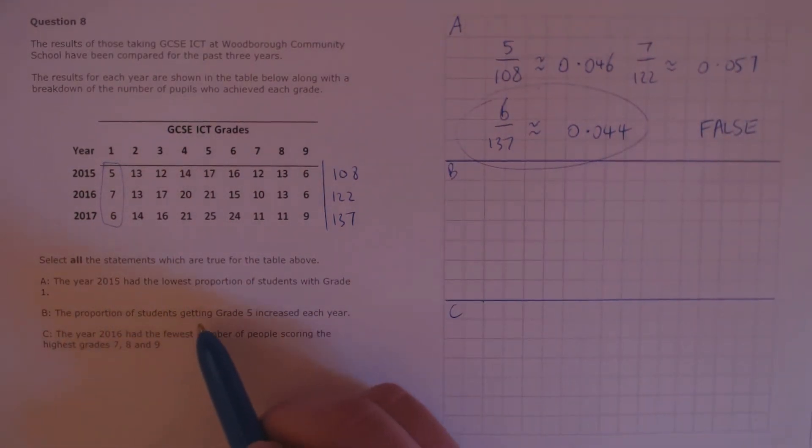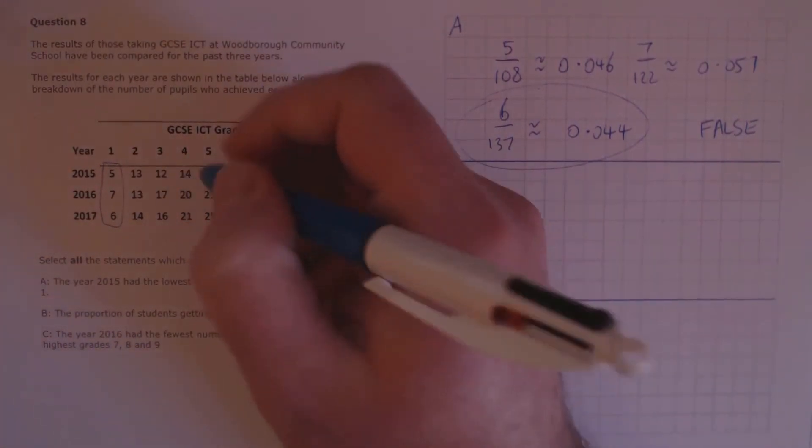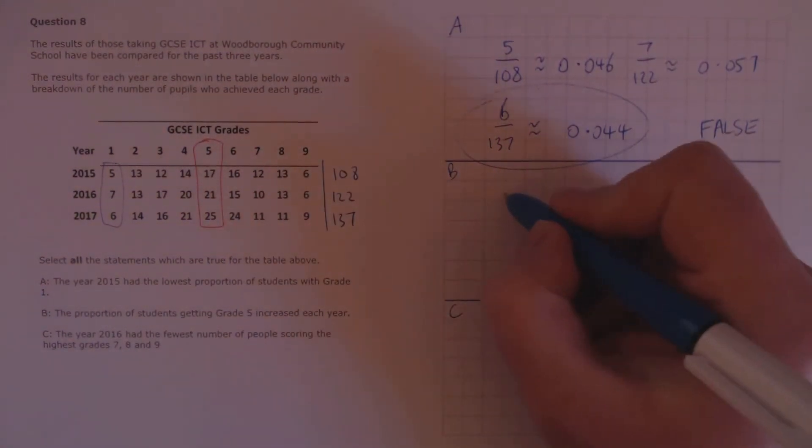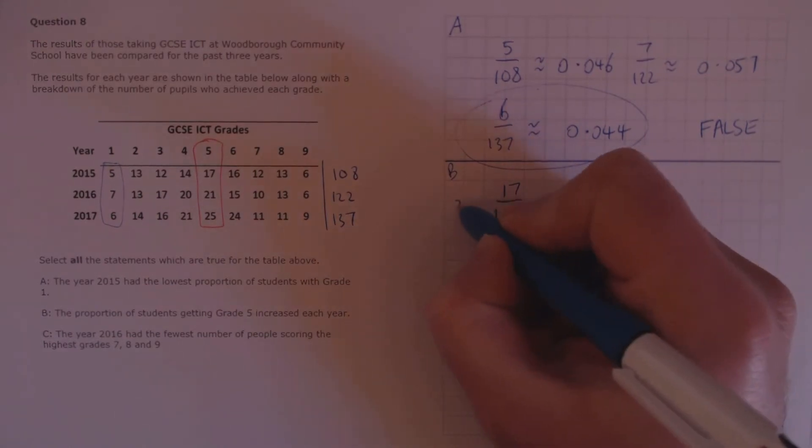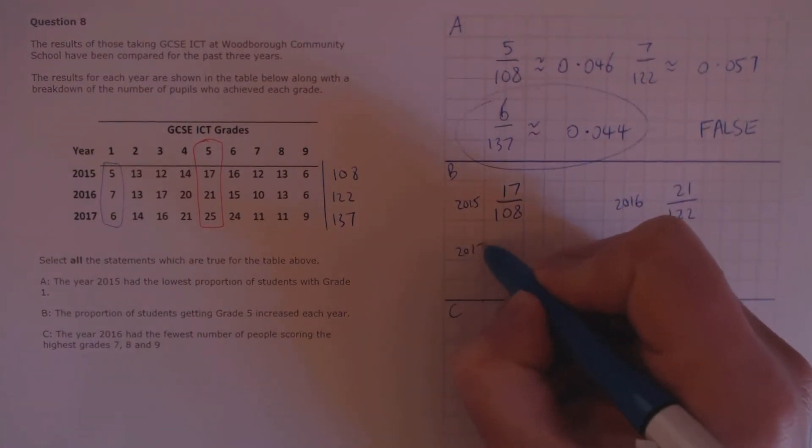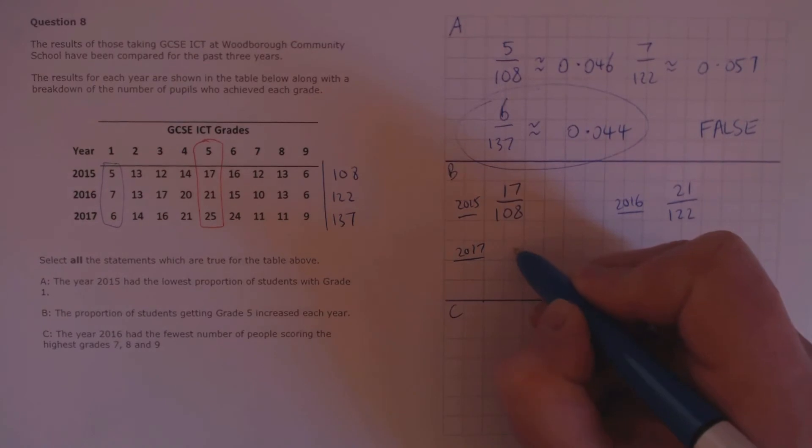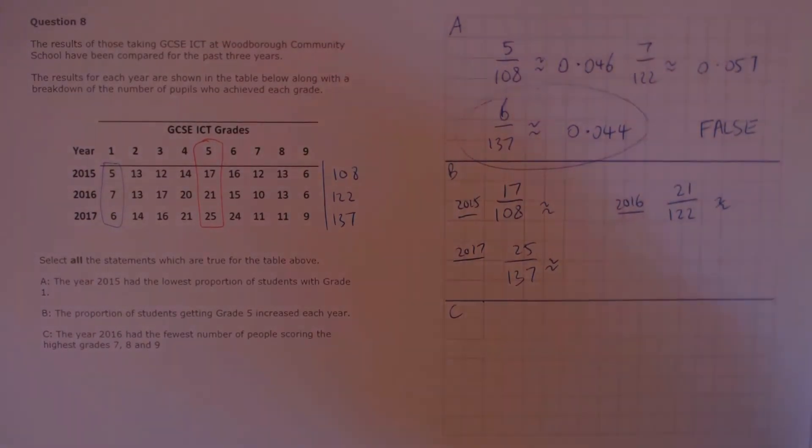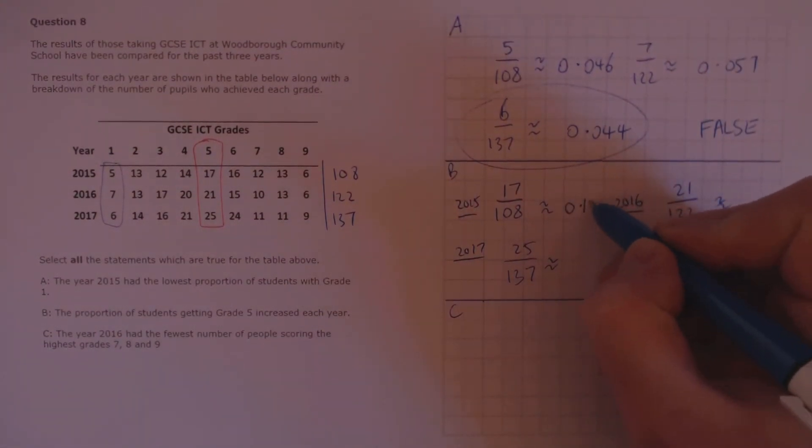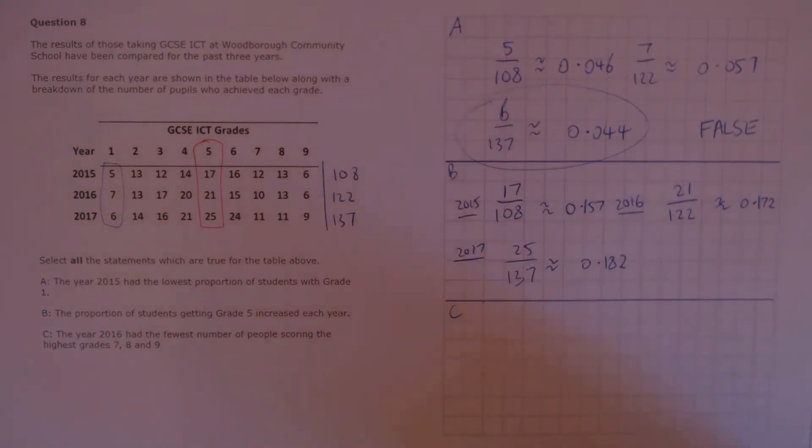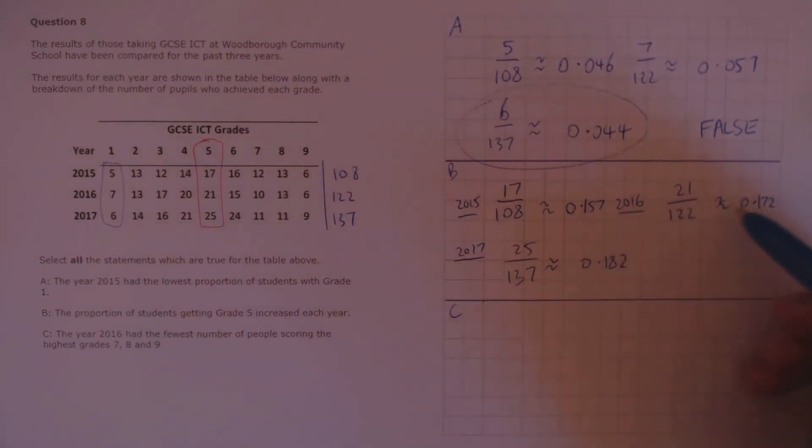For B. The proportion of students getting grade 5 increased each year, so we need to have a look at this part of the table here. Let's calculate the proportion for each year. That's 17 over 108 for 2015. For 2016, it's 21 over 122. And for 2017, that's 25 over 137. Those come out to around 0.157, 0.172, and 0.182, which we can see is an increase each year. This proportion increases from 2015 to 2016, and again to 2017. This is true.